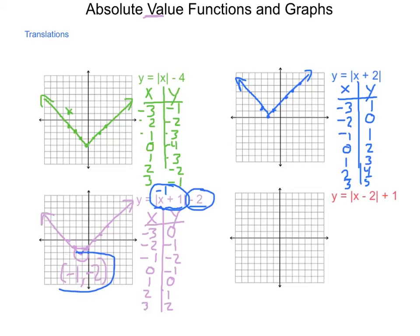Using that as a shortcut: where would we expect to find the vertex of the next function? What does it take to make the inside of our absolute value 0? That value is 2. And what is the y value outside? That's a positive 1. So we should expect to find our vertex at the point 2 comma 1.